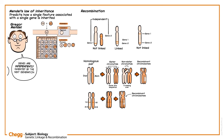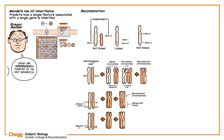Similarly, the chances of recombination are greater between distant genes, and these genes are not inherited together. But adjacent genes, due to fewer recombination sites, are inherited together. This is called genetic linkage, and such genes are called linked genes.